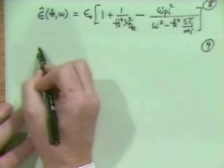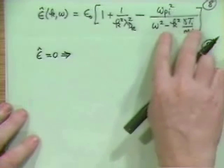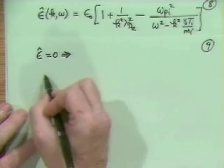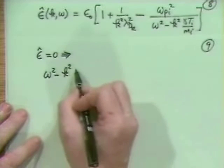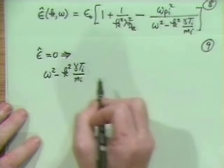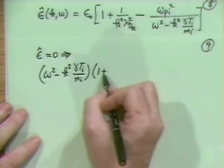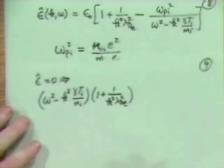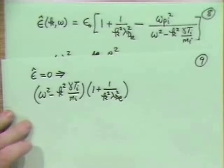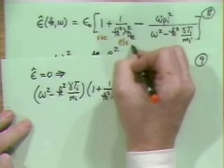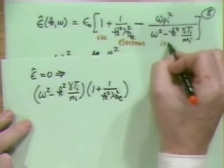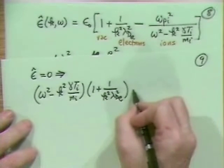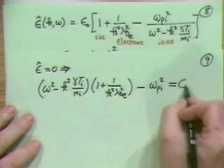So we'll just set epsilon hat to zero. What does epsilon hat equals zero give us? We multiply up, and we get omega squared minus k squared gamma Ti over Mi. That is going to be multiplied by 1 plus 1 over k squared lambda Debye electron squared, which represents electron Debye shielding. The 1 is vacuum, the 1 over k squared lambda Debye squared is electrons, and this last term is the ions. And this gives us minus omega Pi squared, all equal to zero.